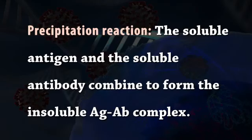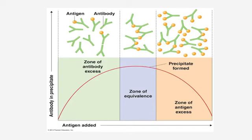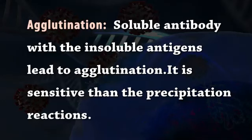The second stage leads to precipitation and agglutination. Finally, there is the neutralization or killing of that antigen. Precipitation reaction: soluble antigen and soluble antibody combine to form an insoluble AGAB complex. The lattice hypothesis explains that when there is a correct concentration of both antigen and antibody, precipitates form the lattice. If the concentration of either increases, no precipitation occurs. Agglutination: soluble antibody with an insoluble antigen leads to agglutination. It is more sensitive than the precipitation reaction.